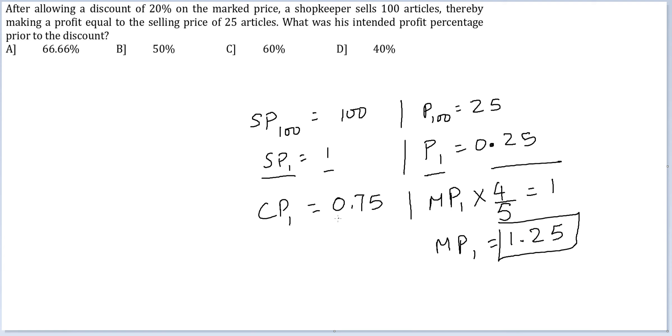Now you have marked price and cost price. The intended profit percentage will be 0.5 divided by 0.75 times 100, which is 2/3 times 100, which equals 66.66%. Option A will be your answer.